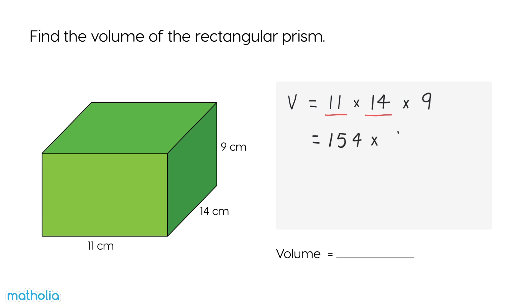154 times 9 equals 1386. The volume of the rectangular prism is 1386 cubic centimetres.